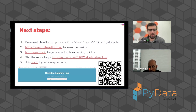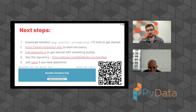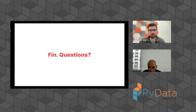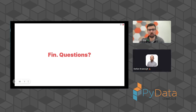Next steps: you can download Hamilton on PyPI, go to tryhamilton.dev, go to hub.divers.io to get started quickly, star the repository on GitHub — we appreciate it and it lets us know people are interested. Join Slack if you have any questions. We'll be around later to answer questions and are in the chat. Thank you so much.